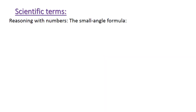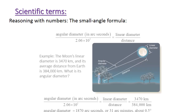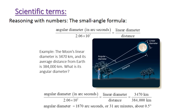Now for the scientific terms and reasoning with numbers: the small angle formula. The formula for calculating small angles is: angular diameter (in arc seconds) divided by 2.06 × 10⁵ equals linear diameter divided by distance.